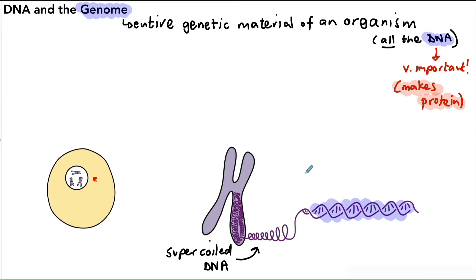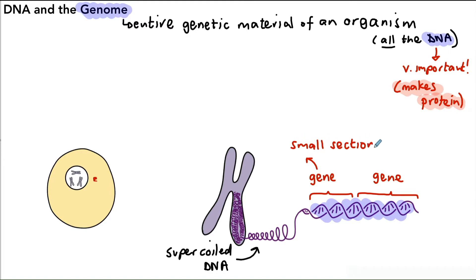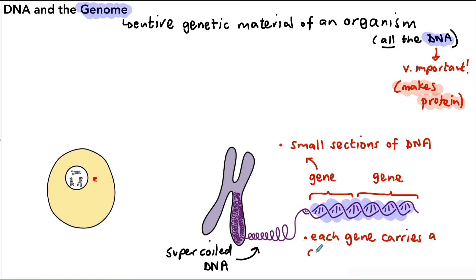Along the length of the DNA there are individual sections which we refer to as genes. A gene can simply be described as a small section of DNA, and you could add that it codes for a protein. So there are two key points about what a gene is: it's a small section of DNA, and each gene carries the code to make a specific protein.